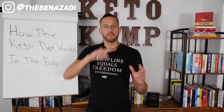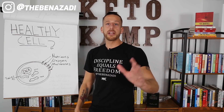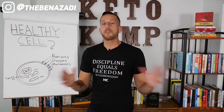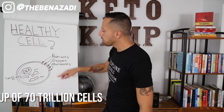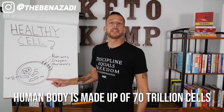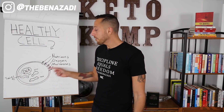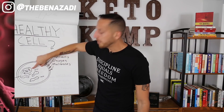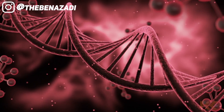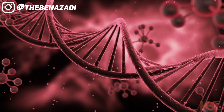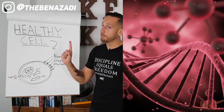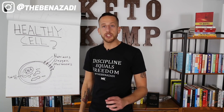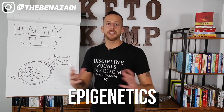Let's get into how this works in the body. I want to show you what it looks like for a healthy cell to be functioning at a high level. We were created to thrive, not to survive. The human body is made up of 70 trillion cells. Every cell inside of it has DNA, the genes you are born with. You cannot change your genes that you're born with, but you can change the expression of those genes — it's called epigenetics.